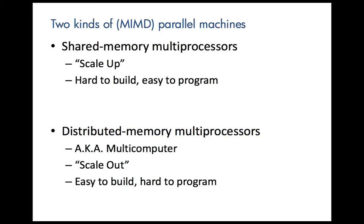MIMD machines, unlike SIMD machines, are classified into two general classes. The shared memory multiprocessors — an approach called scale-up — have many processors that all communicate to one memory. Data can be transferred from one processor to another by storing it in that memory, where any of the processors can then load it. The conventional wisdom about shared memory multiprocessors is that these are difficult and costly to build, but relatively easy to program.